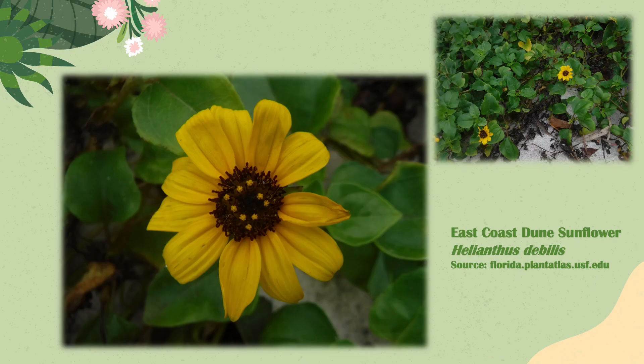This is the east coast dune sunflower, Helianthus debilis. This flower is a self-feeder and it is particularly attractive to the three B's: bees, butterflies, and birds.